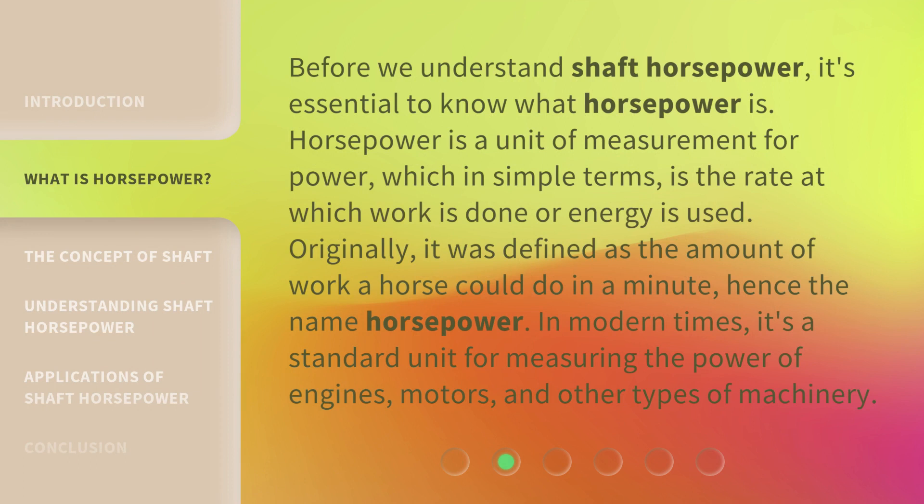Before we understand shaft horsepower, it's essential to know what horsepower is. Horsepower is a unit of measurement for power, which in simple terms is the rate at which work is done or energy is used. Originally, it was defined as the amount of work a horse could do in a minute, hence the name horsepower. In modern times, it's a standard unit for measuring the power of engines, motors, and other types of machinery.